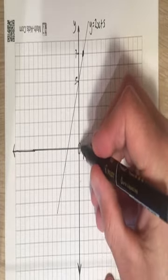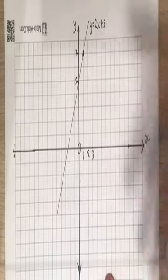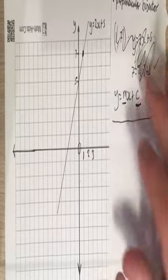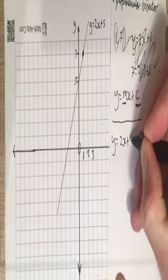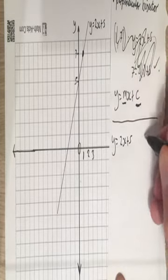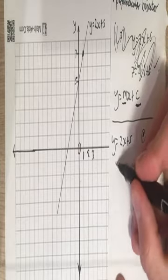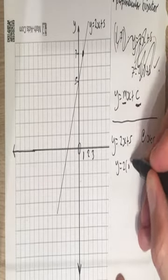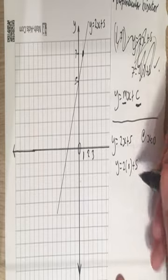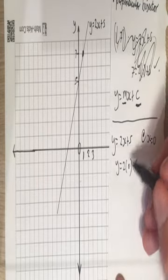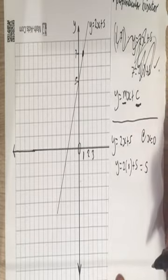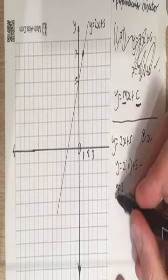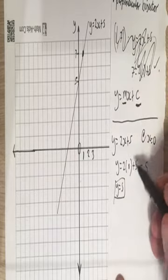Here's the x-axis: here was 1, 2, 3. This is where x equals 0. So I could take this equation, y equals 2x plus 5, and put in x equals 0. At x equals 0, y equals 2 lots of 0 plus 5. 2 times 0 is 0, so y equals 5. That's the y-intercept when x equals 0.